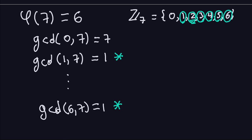Fortunately, there is a much better way to compute phi of any natural number, and that way is going to use the factorization of this number. What I'm going to show you in the next video is a faster way — assuming that we know the factorization of the number — to compute phi of any natural number. So I'll see you in the next video.